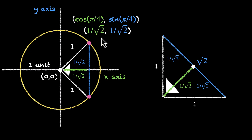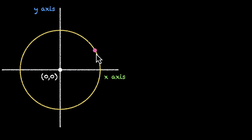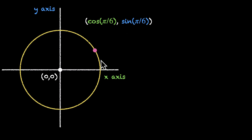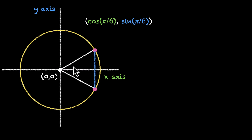Now let's move to 30 degrees or pi by 6. On the unit circle, joining this point with the origin makes an angle of 30 degrees or pi by 6, so the coordinates give us cos and sine of pi by 6. Finding its mirror image and joining them, then connecting both to the origin, gives us a triangle. This angle is 30 degrees, this is also 30, so 30 plus 30 is 60 degrees or pi by 3. The two white sides are equal, meaning the corresponding angles are also equal, and all three angles turn out to be pi by 3 — making this an equilateral triangle.